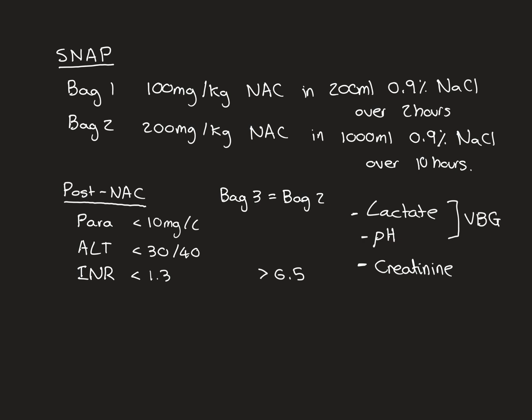You give bag three, which is a copy of bag two. After bag three, you then repeat post-NAC bloods. You do all of these again, and if now they're all in acceptable ranges, then the patient can be discharged. If any one of them remains abnormal, then that indicates that they need a fourth bag of NAC, which is again a copy of bag two. And again, you need to reassess and make sure that you don't believe that they've got hepatonecrosis if it is the ALT or the INR that remains deranged. Then after bag four of NAC, they have post-NAC bloods again.